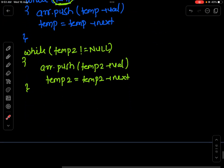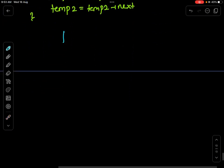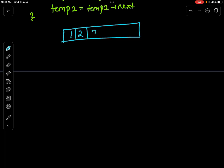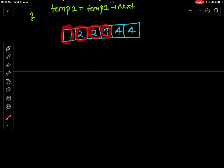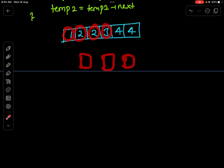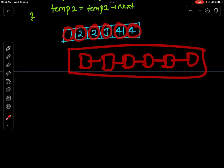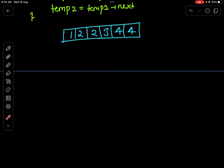We already have the sorted array as 1, 2, 2, 3, 4, and 4. While traversing through this array, we will create every single new node for every single element. For example, at 1 we create one node, at 2 we create one more node, at 3 one more, at 4 one more, and so on — and at the same time attach them so we get a single sorted linked list. I hope you understand what I'm trying to say.